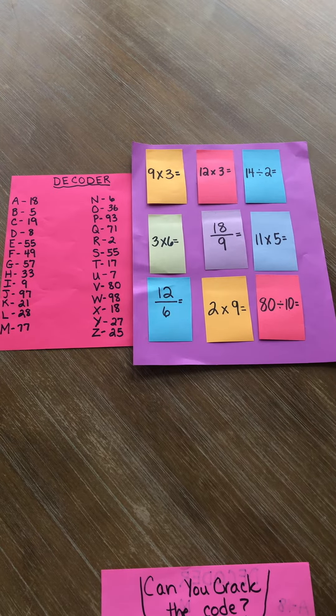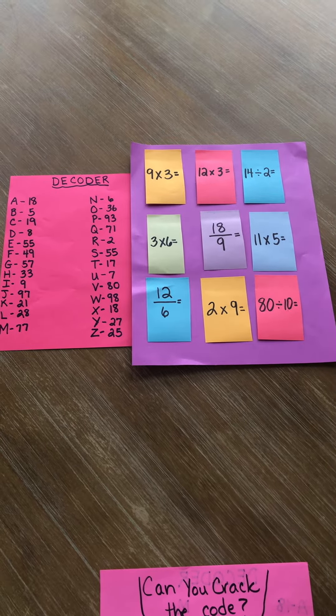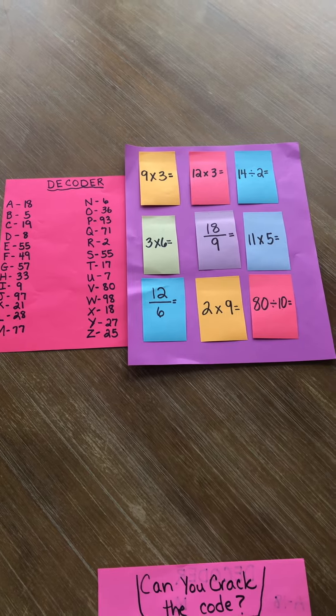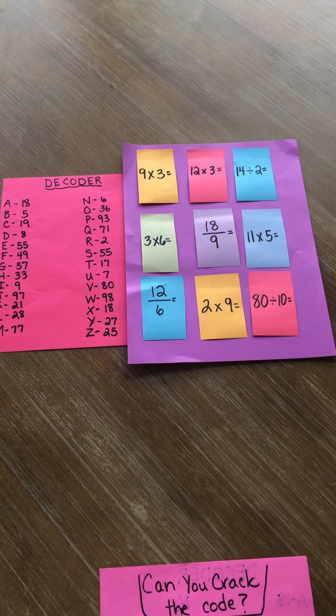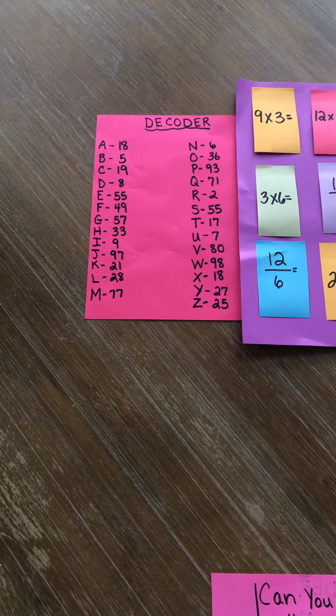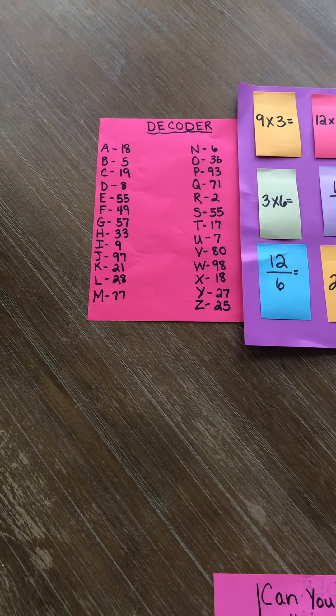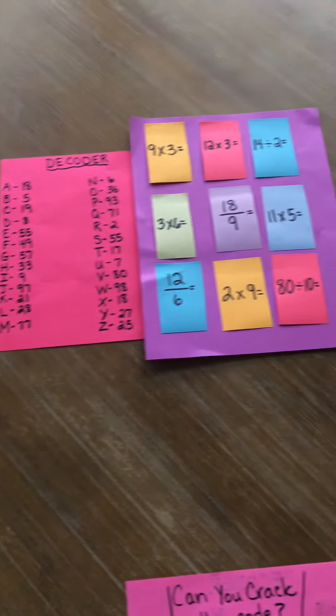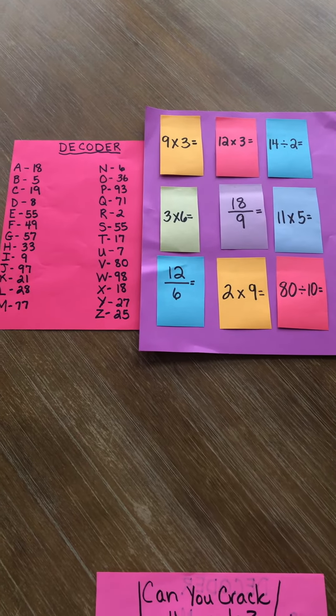Underneath each sticky note is a letter. Those letters form words for each part of my secret message. You have to look at the decoder on the left and find the letter that matches the answer when you find the answers on the sticky note.